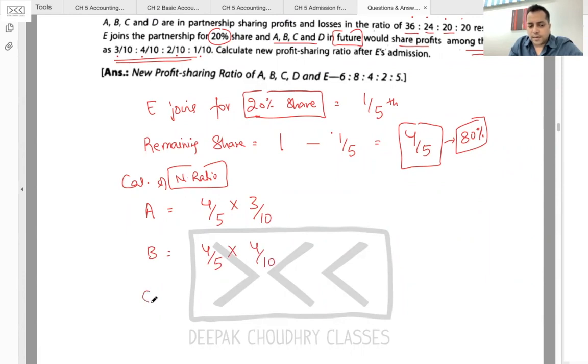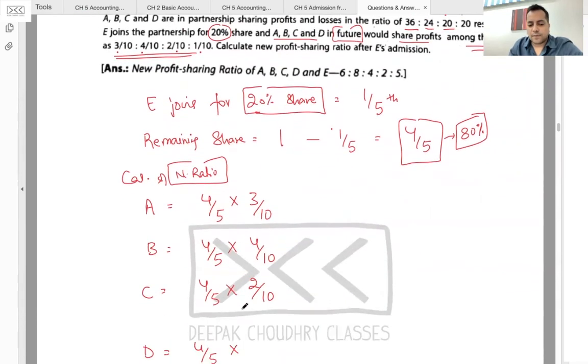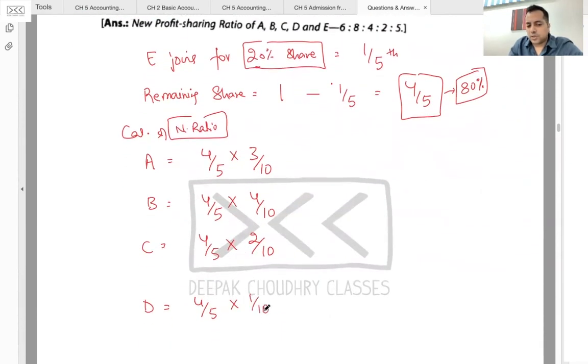C will get four-fifth ka two by ten, aur D will get four-fifth ka one by ten.